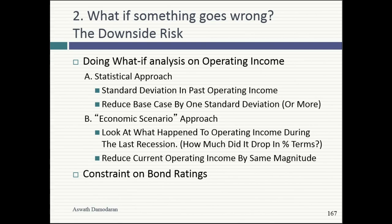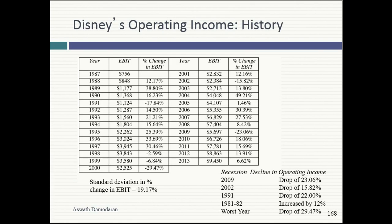Then comes the second question: any prudent management team should ask, what if something goes wrong? The easiest way to answer this is to look at what can go wrong, which varies across companies. A big stable company might have a bad year that's a 5% drop in operating income. For Disney, I went back to 1987 — 26 years of history — and the worst year Disney had was a drop in operating income of about 29% in 2000. Whatever happened that year, that was a really bad year.